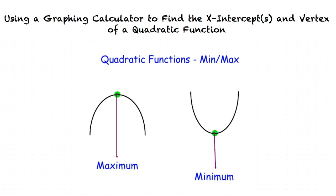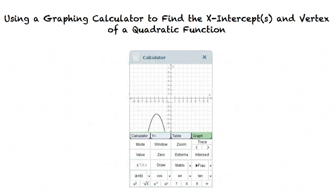The vertex of a quadratic function is always either a maximum or a minimum. In order to find the exact value of the x and y position of the vertex, which in this case is the maximum, we will click on the extrema button.